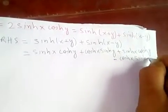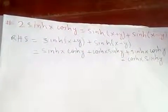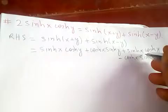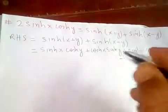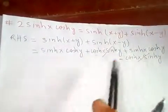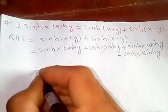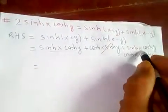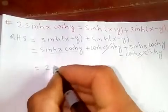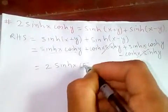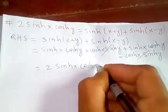Now we can cancel the cosh(x)·sinh(y) terms, since they are opposite and equal. What remains are the two sinh(x)·cosh(y) terms, which combine to give 2·sinh(x)·cosh(y).